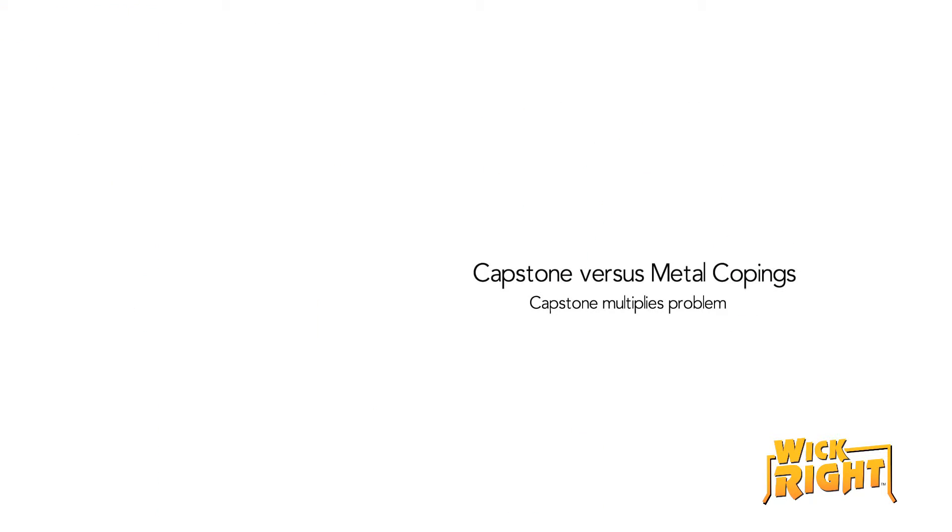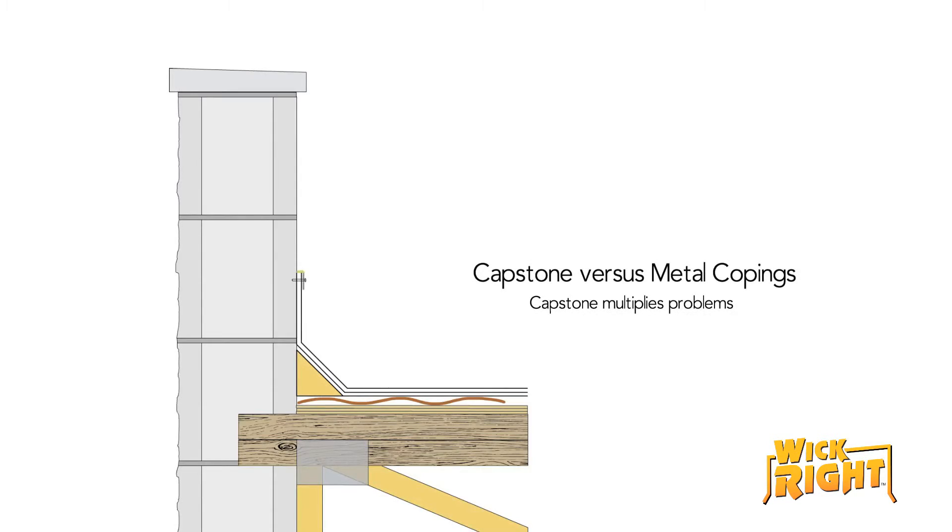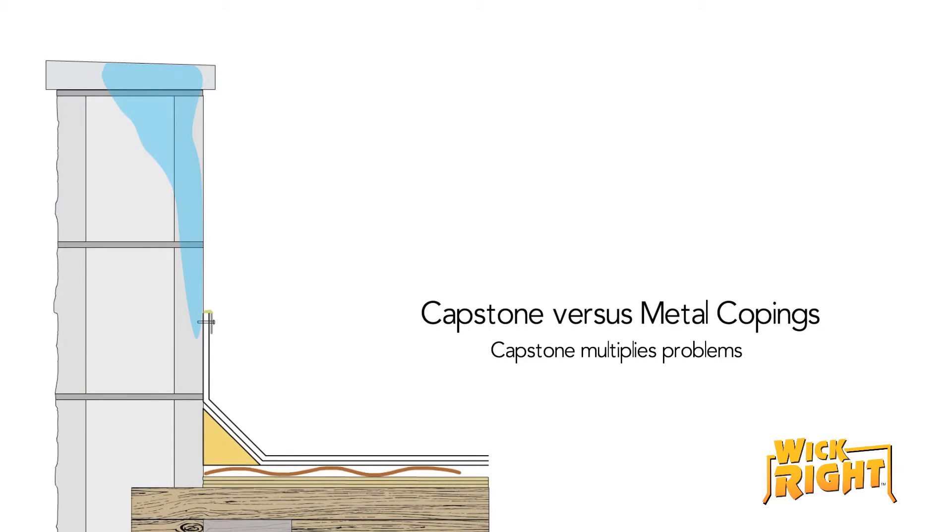If the building has capstones on top instead of metal copings, the problem is multiplied tenfold. While capstones look great, they are extremely porous. If they are not flashed properly, capstones allow a great deal of water directly into the wall.